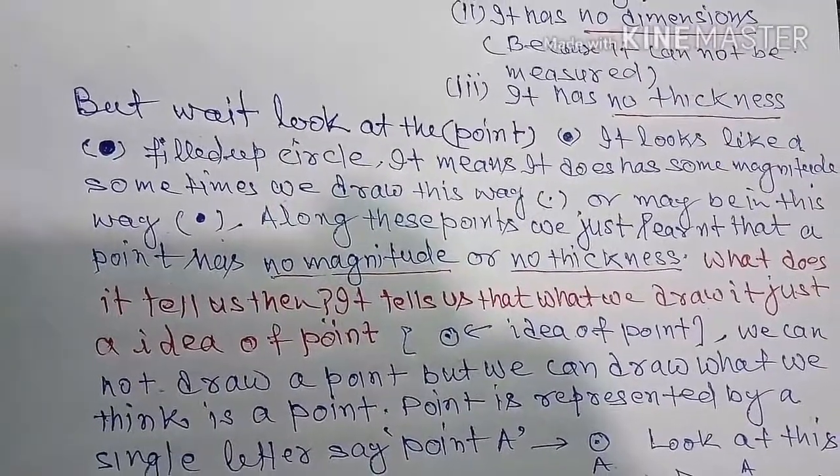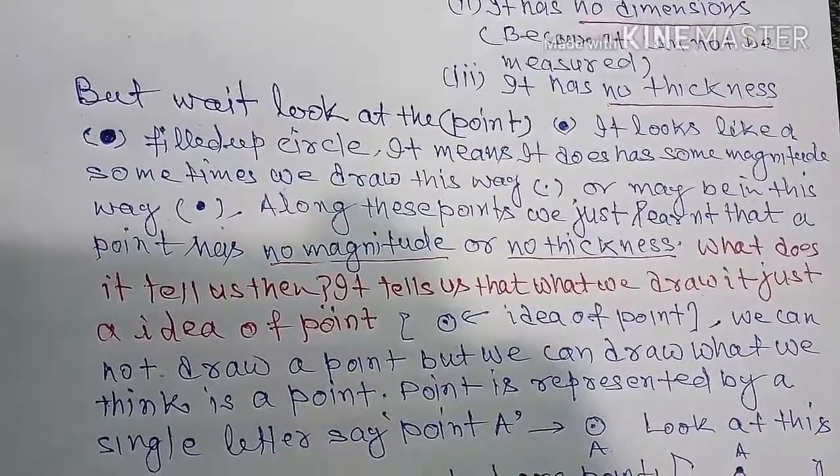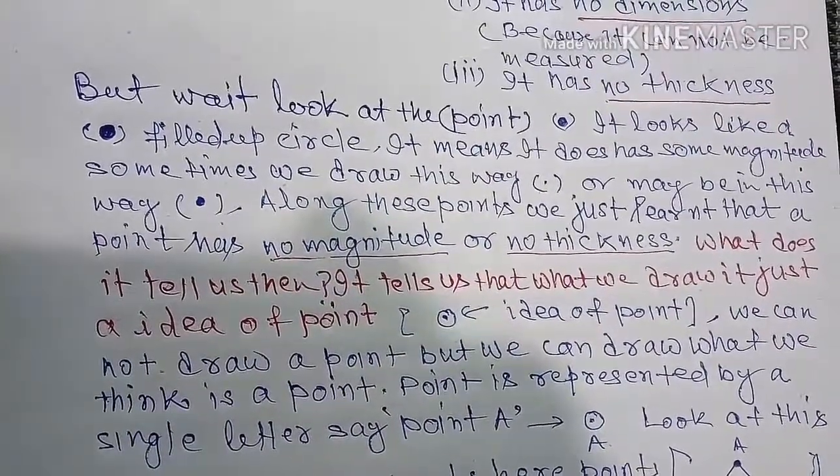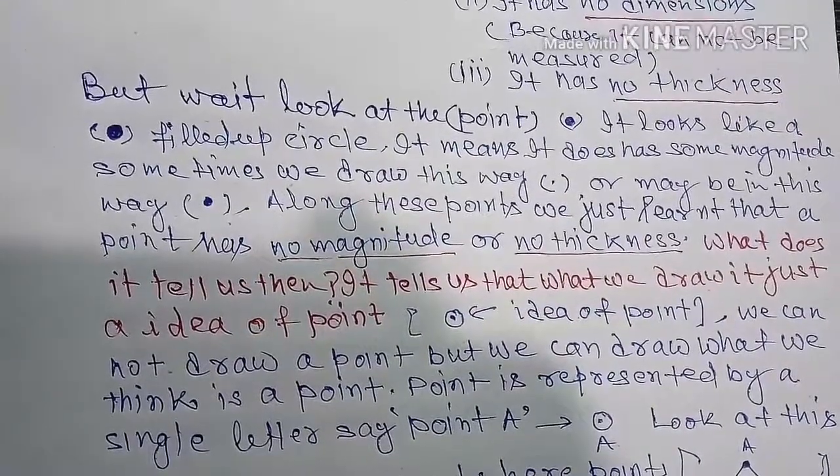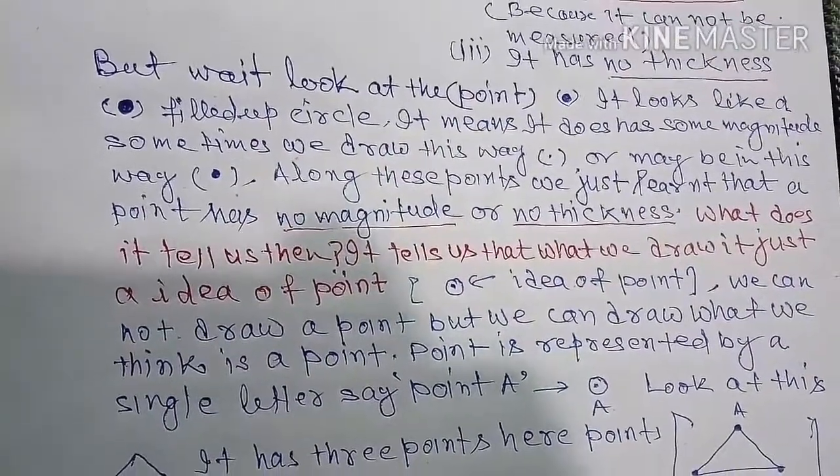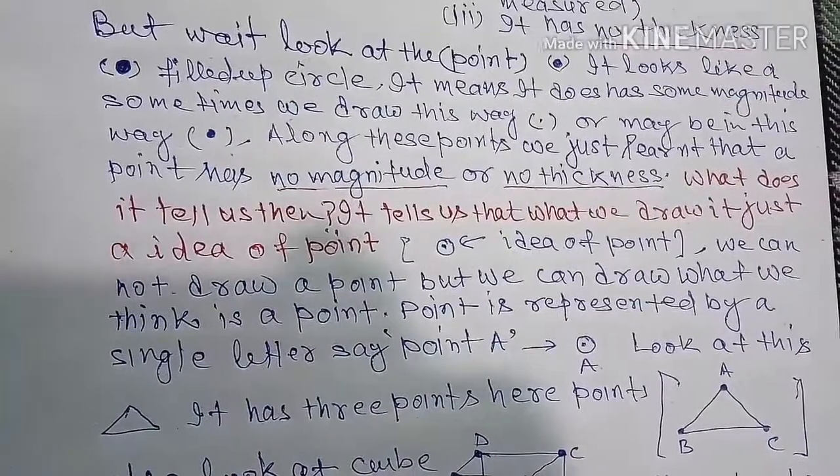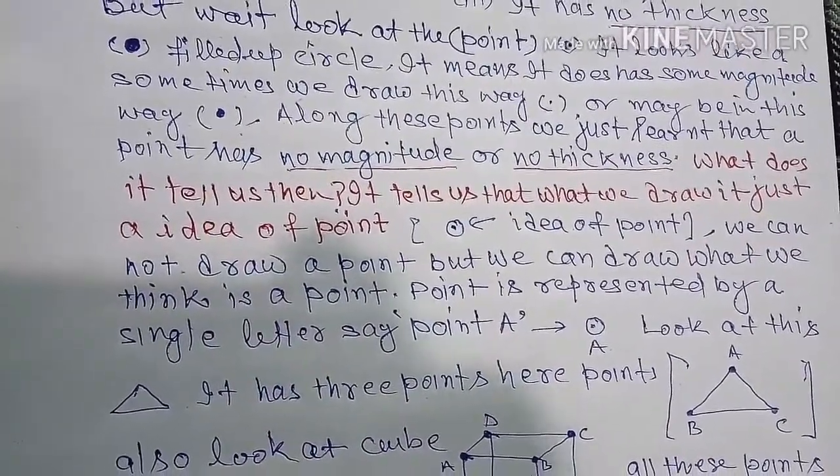Point is represented by a single letter, say point A, written between inverted commas. Look at this triangle. It has three points here, point A, B, C.